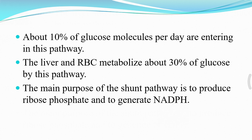About 10% of glucose molecules per day enter this pathway. The liver and RBC metabolize about 30% of glucose by this pathway. The main purpose of the shunt pathway is to produce ribose 5-phosphate and to generate NADPH.